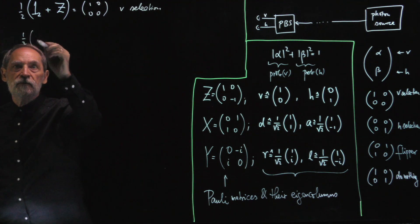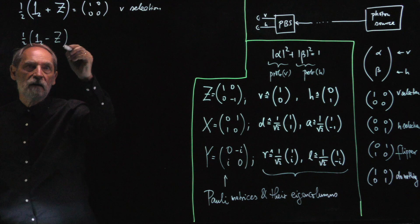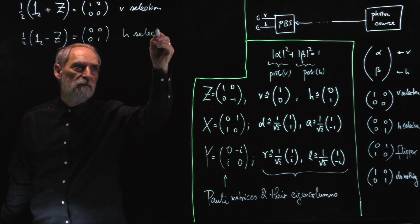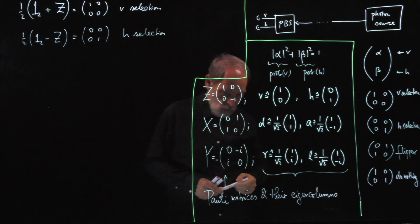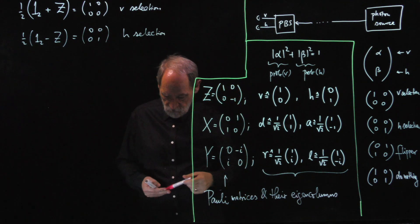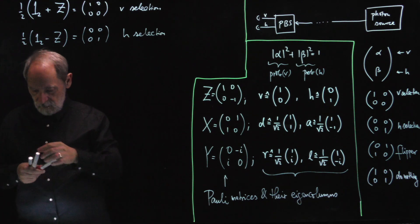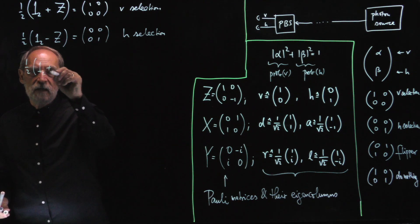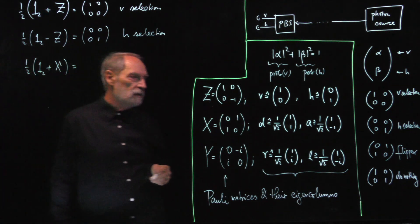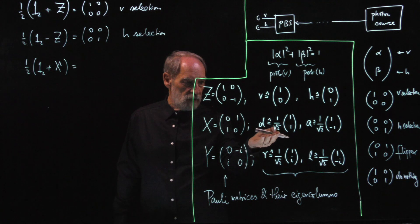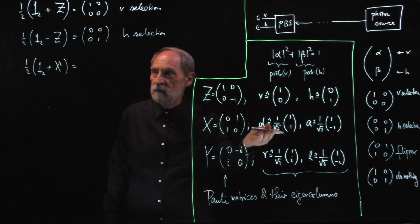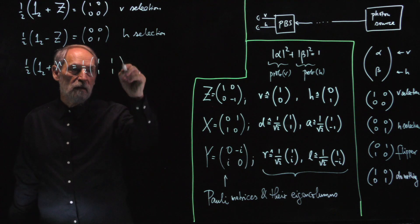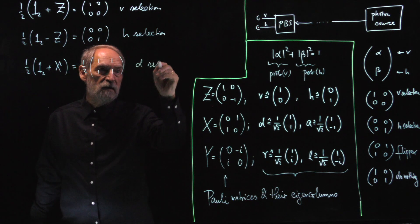And if I take half of the difference — half of the identity plus the x matrix — that's the matrix for d-selection, which should describe a matrix that selects the diagonal polarization. What we get is half of a matrix which has 1, 1, 1, and 1. And this should be a selecting matrix.